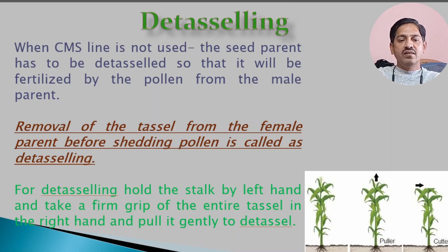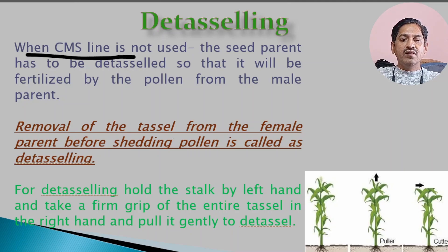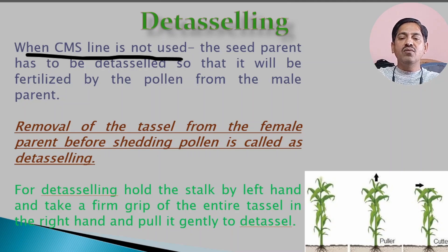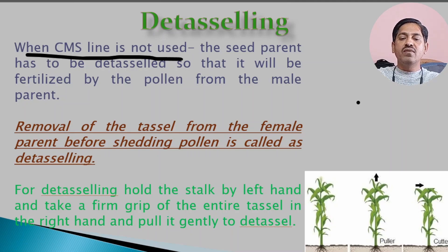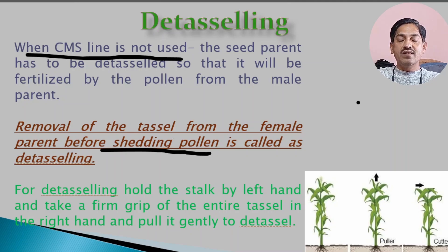Detasseling is required when the CMS (cytoplasmic male sterile) line is not being used in seed production. If you have a male sterile line, you don't need to do detasseling because tassels do not form on male sterile plants — no male flowers are seen on the plant. If you do not have a male sterile line, detasseling — the removal of tassels from the female parent before pollen is shed — must be done. This is the most important operation in hybrid seed production.